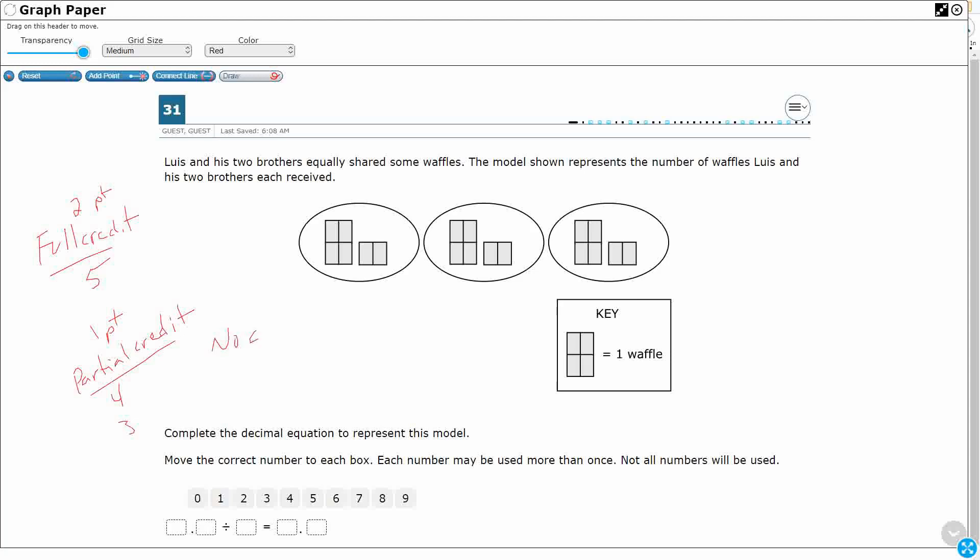And then no credit, zero points. That's going to be if you just get two correct, one correct, or zero correct. So that's how the scoring works here. Let's take a look at our problem.